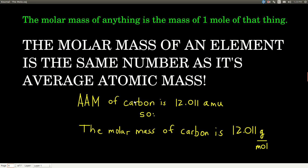The molar mass — a really important concept. The molar mass of anything is the mass of one mole of that thing, how much one mole weighs, typically in grams. A key concept: the molar mass of any element is the same number as its average atomic mass. If we look at the periodic table, the average atomic mass of carbon is 12.011 AMUs. So the molar mass of carbon is 12.011 grams per mole. As a conversion factor, one mole of carbon equals 12.011 grams of carbon.